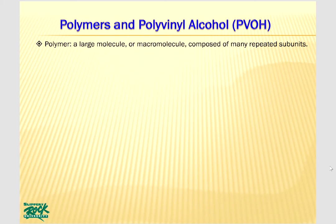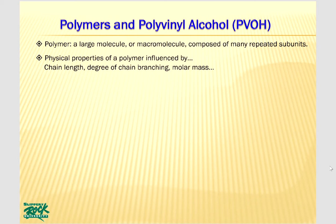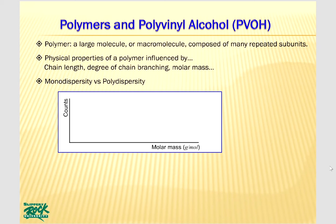Polymer is a large molecule or macromolecule that is composed of many repeated subunits. The subunits are called monomers. The physical properties of a polymer are influenced by chain length, degree of chain branching, molar mass, and so on. However, the physical properties are not easily specified simply by the molecular formula of the polymer, because the chain length or molar mass of the polymer is not uniform in most cases. So it is important to understand the distribution of molar masses of a polymer.